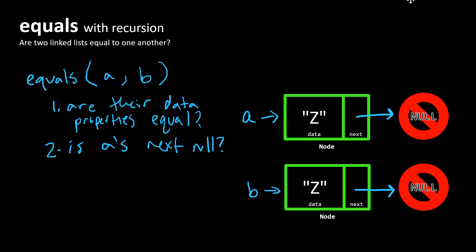And in this case, that's true. If A is null, that means A is the tail node of its list. So for these two lists to be equal to one another, it must follow that B must also have a value of null in its next value as well.